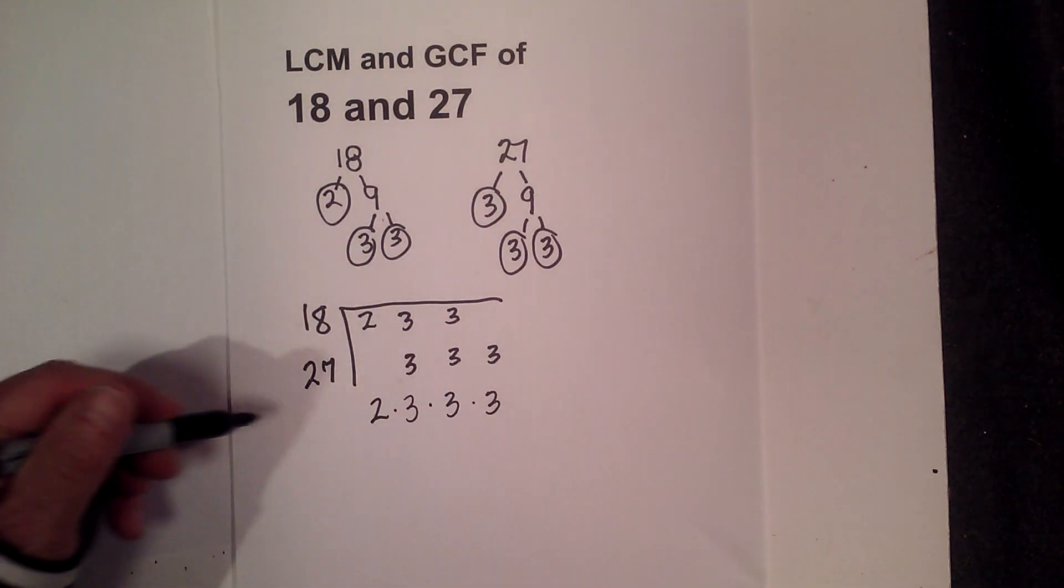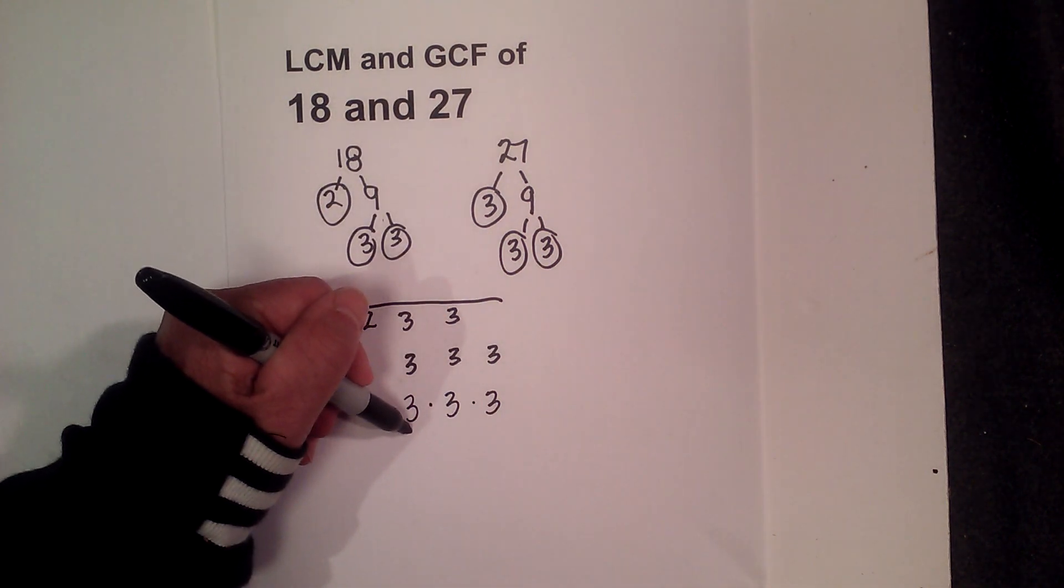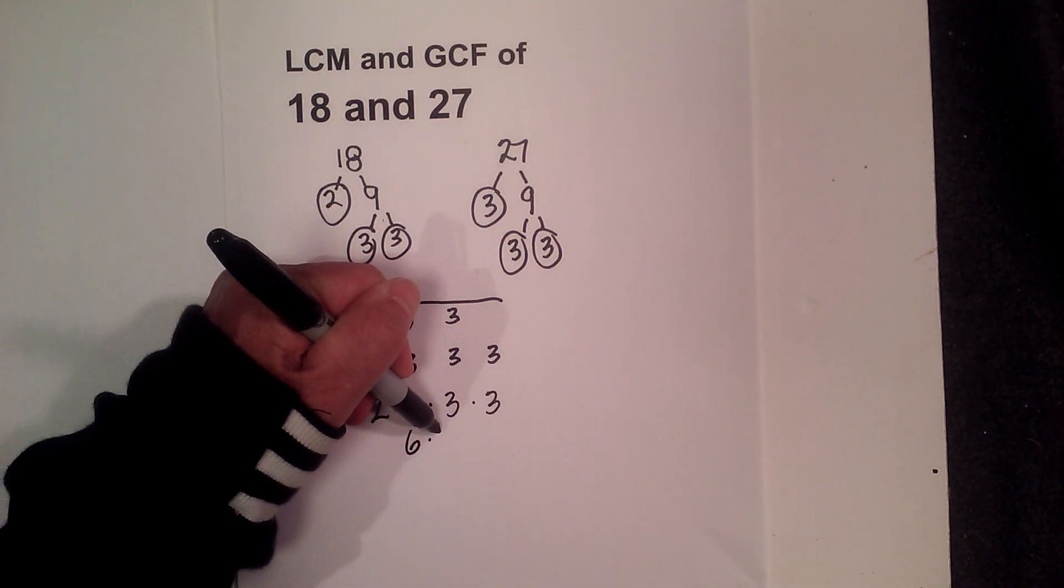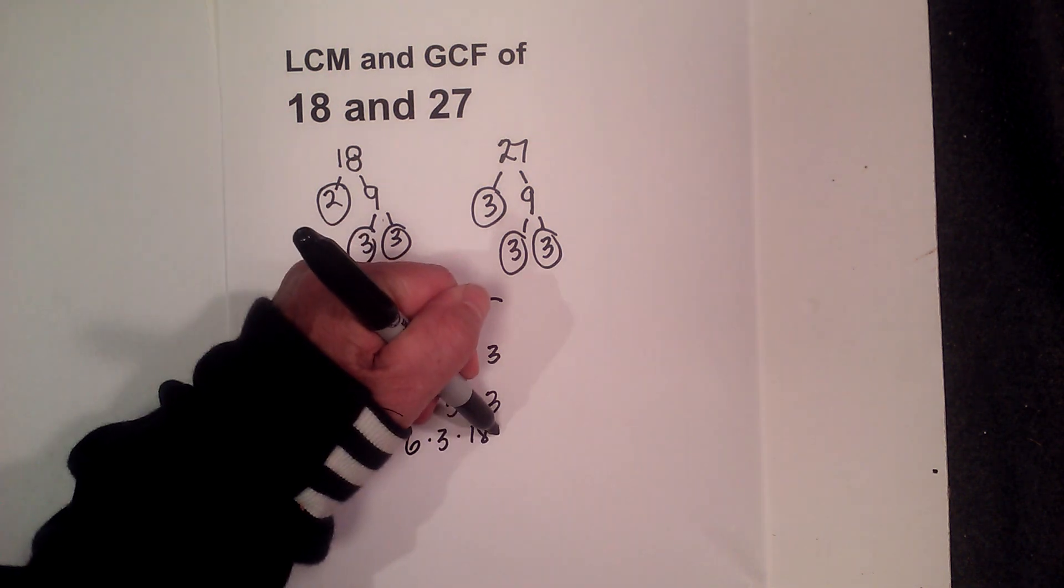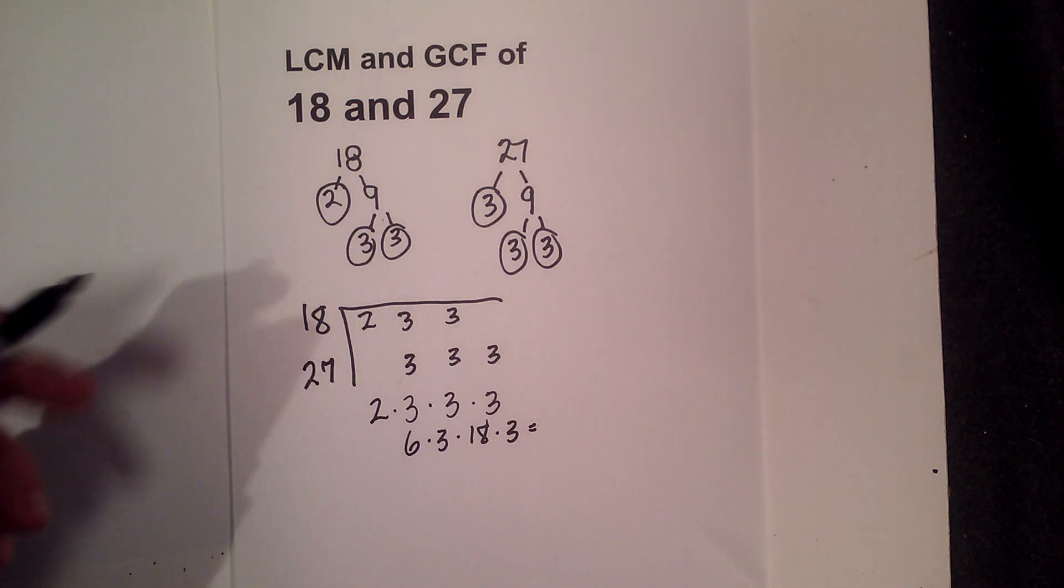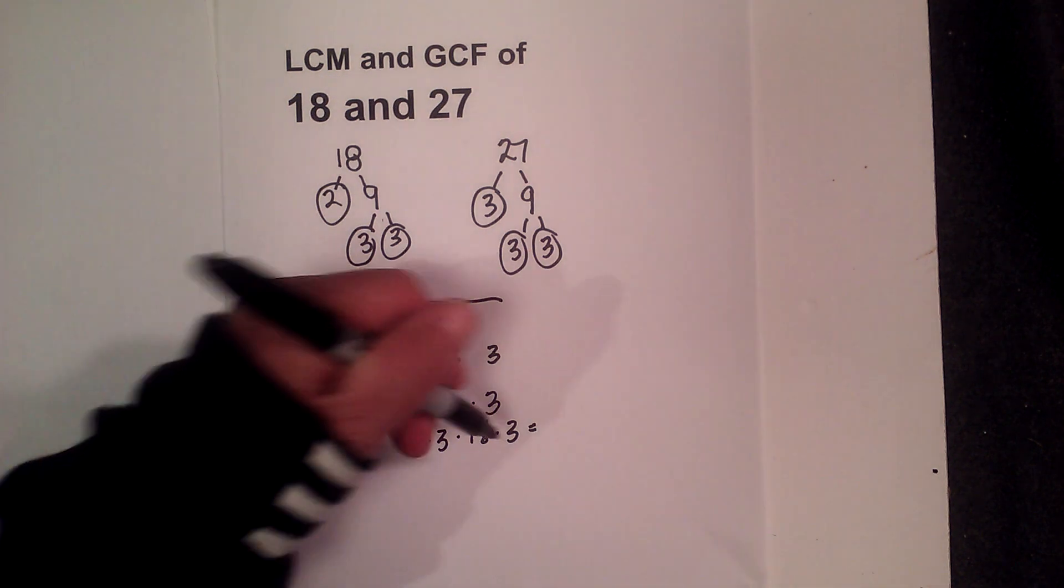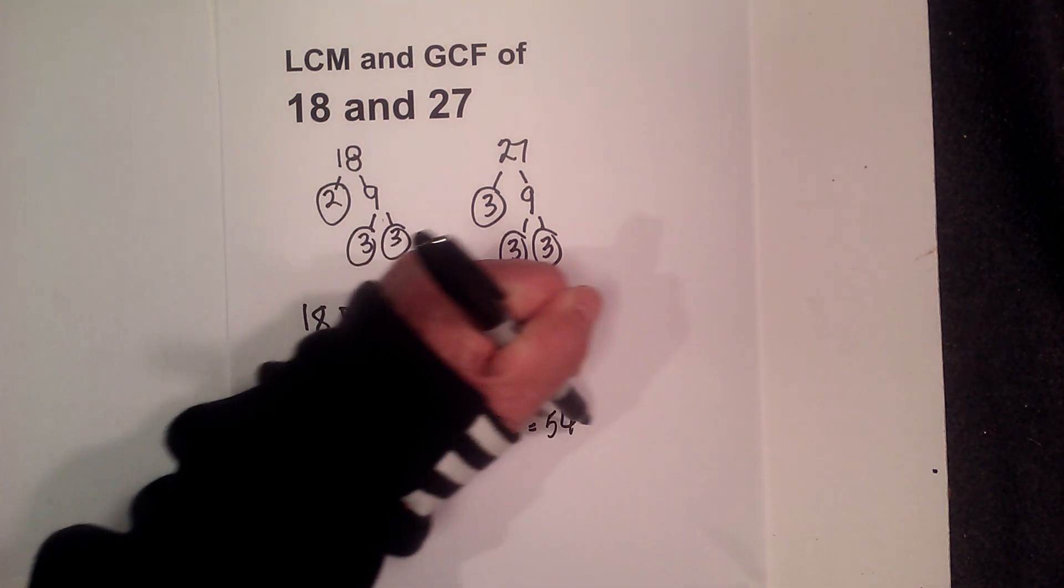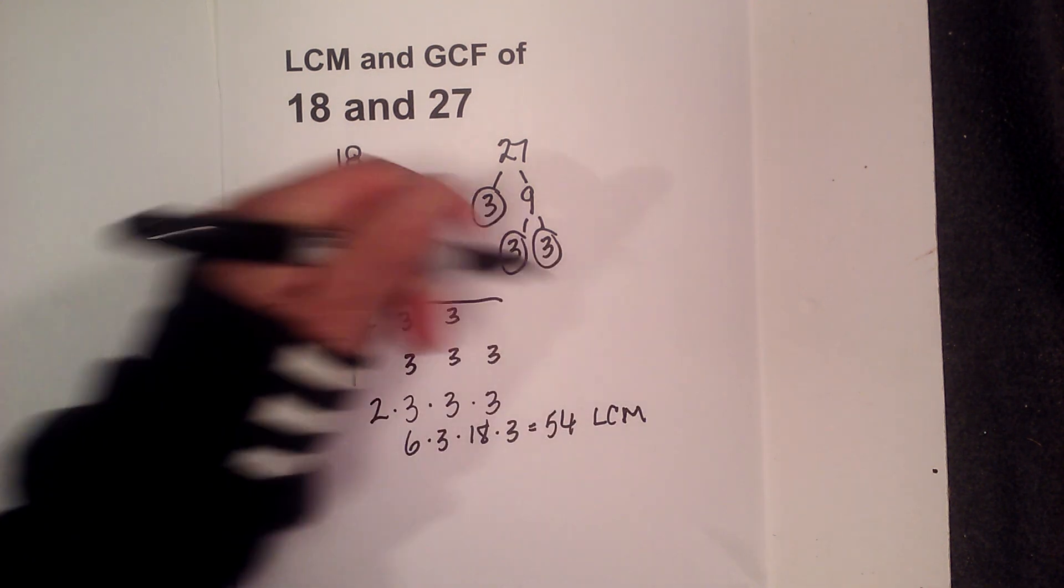Now all you do is multiply these together. 2 times 3 is 6. 6 times 3 is 18. And then 18 times 3 is 54. So that's the LCM.